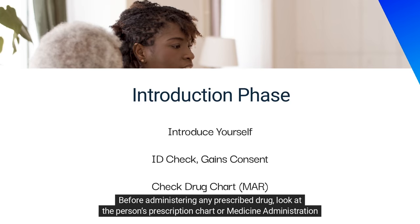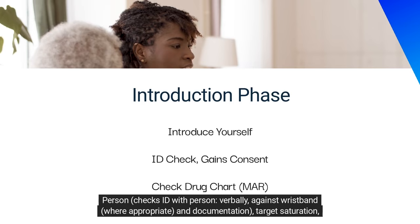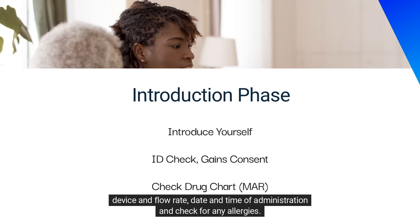Before administering any prescribed drug, look at the person's prescription chart or medicine administration record and check that all of the following are correct: person's ID verified verbally, against wristband where appropriate, and documentation. Also verify target saturation, device and flow rate, date and time of administration, and check for any allergies.